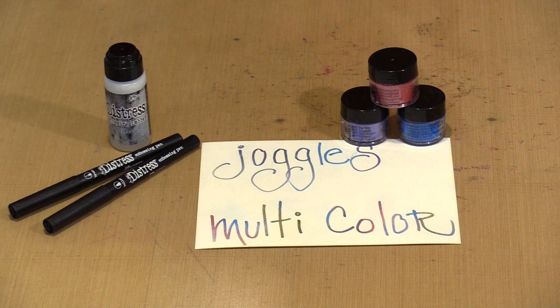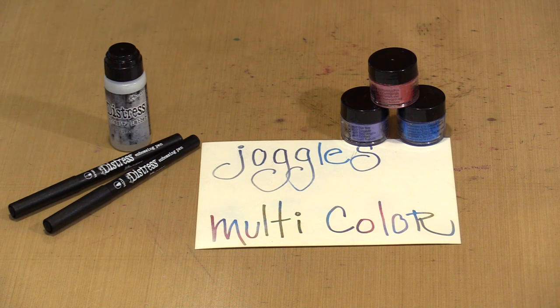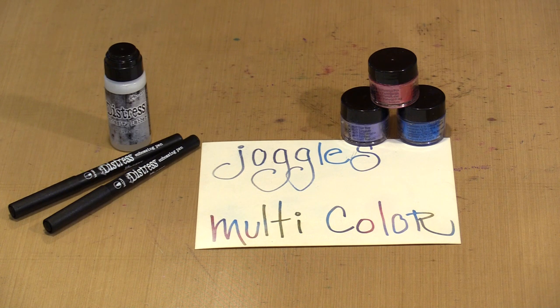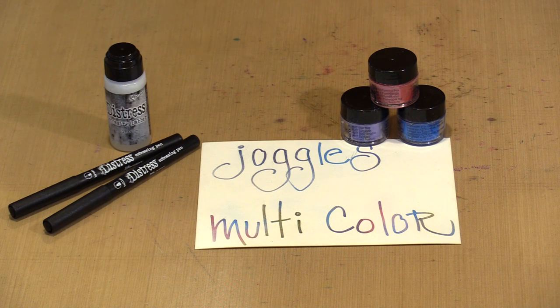The thing to know about Prolex is that it doesn't contain a binder, so you have to adhere it to your surface. You can use ink from an ink pad, embossing ink or pens which are meant to stay wet longer. You can mix it into gel medium. You can use it with glue that dries tacky like what you would use for foiling. There's lots of different ways to do this.